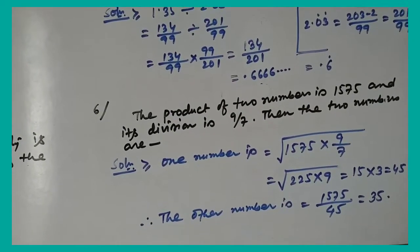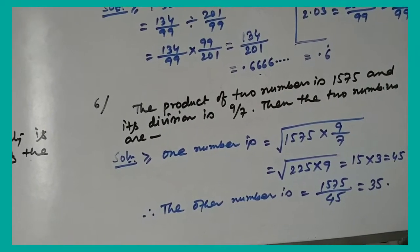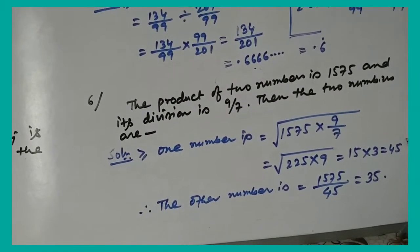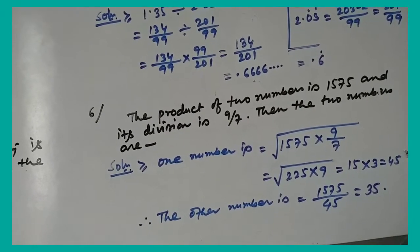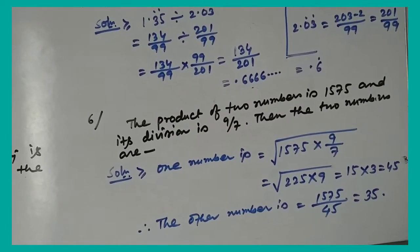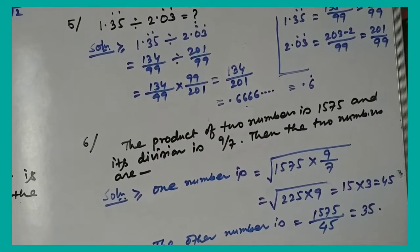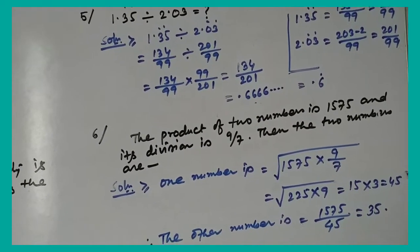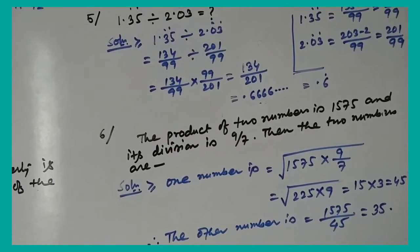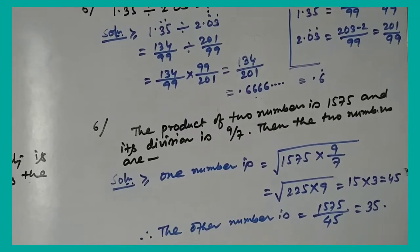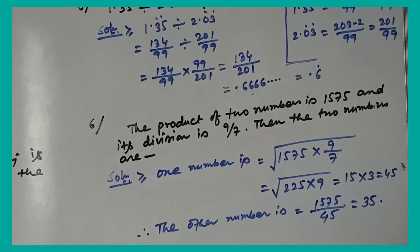Question number 6: The product of two numbers is 1575 and their ratio is 9:7. Find the two numbers. Let the numbers be 9k and 7k. Then 9k × 7k = 1575, so 63k² = 1575, k² = 25, k = 5. One number is 9×5 = 45 and the other is 1575/45 = 35.